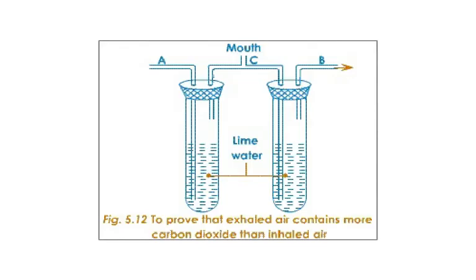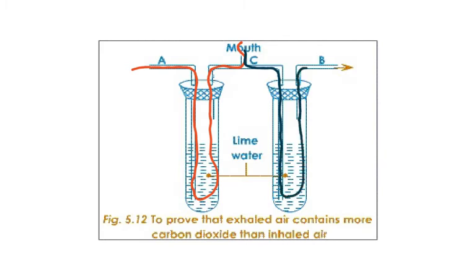To prove that exhaled air contains more carbon dioxide than inhaled air. We have a mouthpiece and the inhaled air is coming in through the outside, dipping into the lime water and then going into the mouthpiece. When the person exhales, it goes in here because this pipe has to close, and the exhaled air goes in here and then it goes out. So this would be the inhaled air and this would be the exhaled air.